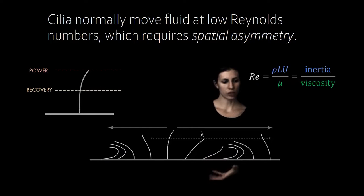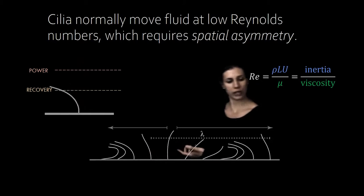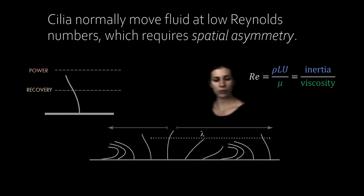Groups of cilia coordinate their motion in metachronal waves which have a distinct wavelength and a distinct frequency. Here you can see an antiplectic metachronal wave where each individual cilium moves from right to left, but the wave is moving from left to right.